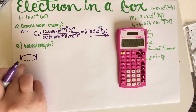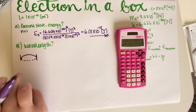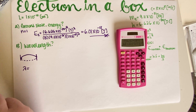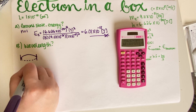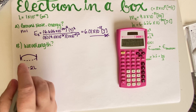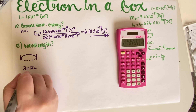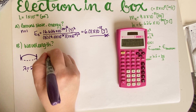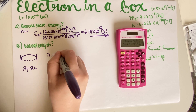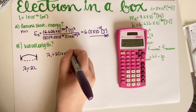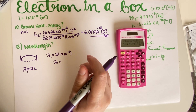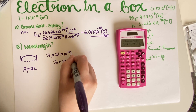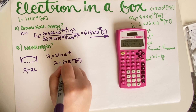For a fixed-fixed standing wave, the first harmonic gives lambda equal to 2L. So lambda₁ = 2 × (1 × 10⁻¹⁰) = 2 × 10⁻¹⁰ meters, or 2 angstroms. That's the final answer for part B.